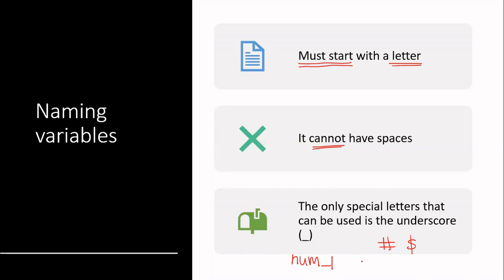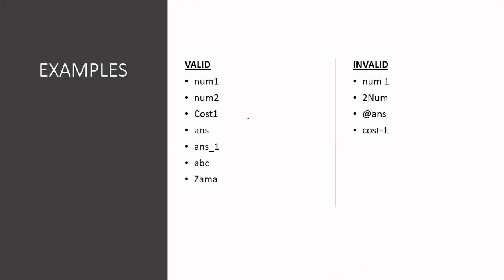So you could have a variable called num_one. Don't confuse the underscore with a dash — if you have num-one, then that's not a valid variable name. The symbol here is called the underscore. Let's look at a few examples. Remember that a variable must start with a letter; it can have numbers, but it should not start with a number. So you can have a variable called num1 — that's valid. We can also have num2, cost1, or uns_one. We could have a variable called ABC.